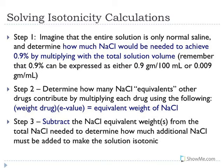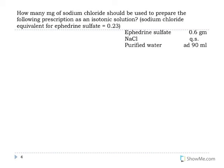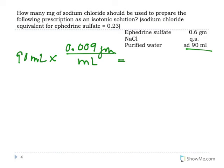Let's look at an example. We're asked how much sodium chloride should be added to make an isotonic solution of ephedrine. Step one: we're making a 90 mL solution, so we multiply 90 mL by 0.9% expressed as 0.009 grams per mL. We find that if this were only a sodium chloride solution, we would need 0.81 grams of sodium chloride.